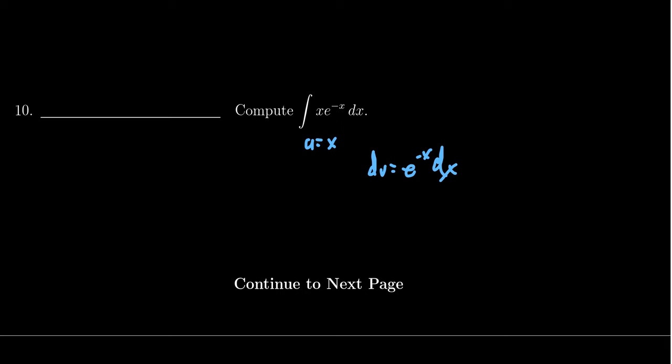Well, let's first remember what integration by parts says, right? If you're integrating udv, this equals uv minus the integral of vdu.